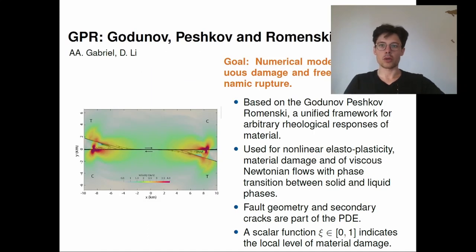So finally, we also develop completely new models for dynamic rupture simulations. Here we have the Godunov-Peshkov-Romensky model, which models continuous damage and freely evolving dynamic rupture. So instead of prescribing the rupture process, as we do in the example I just showed you, we extend our model to simulate the rupture on its own. This gives us a higher detail of the process as we model the process itself, the rupture process. For example, it includes the secondary cracks which you can see here. So you usually wouldn't have those in a traditional dynamic rupture simulation.